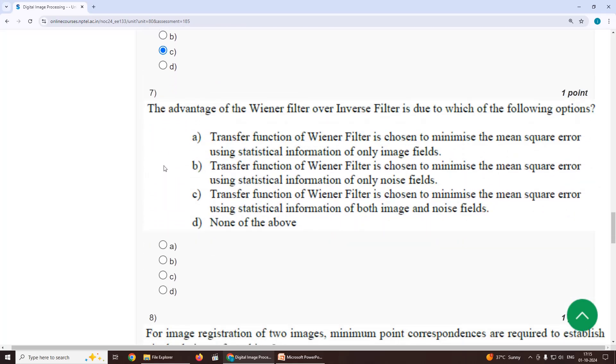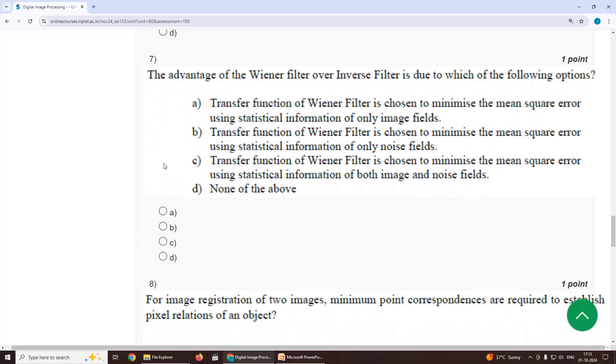Seventh question, the advantage of Wiener filter over inverse filter is due to which of the following option? Our suggestion is option C, transfer function of Wiener filter is chosen to minimize the mean square error using statistical information of both image and noise fields.